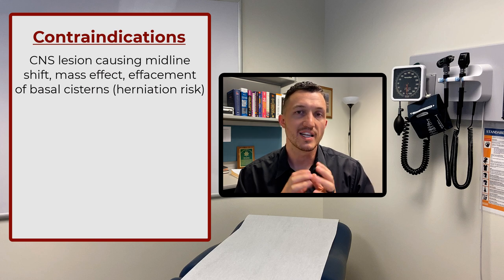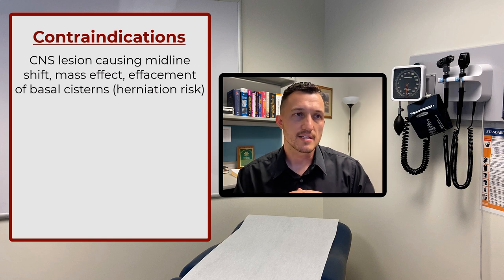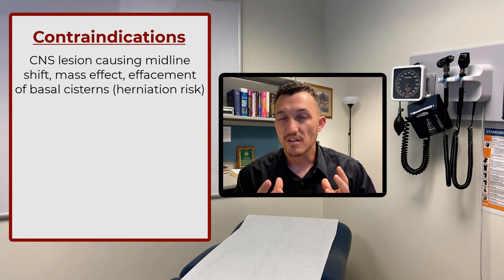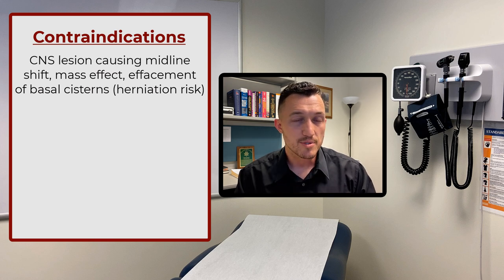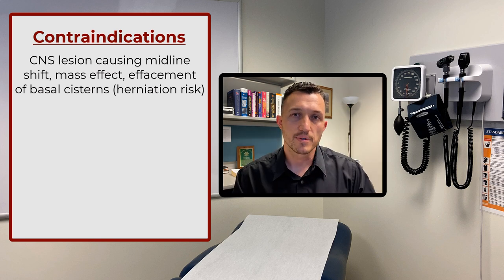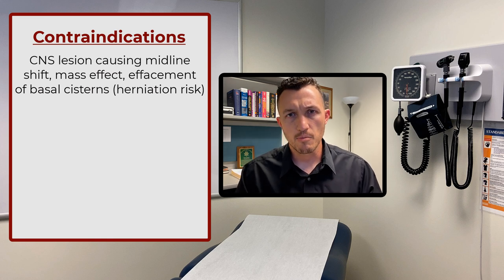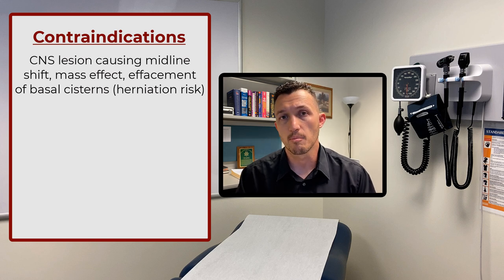We need to know there's no mass effect, midline shift, or abnormal loss of cerebrospinal cisterns on a head CT. Posterior fossa masses, spinal column masses, large brain abscesses, and large brain tumors are all things that can cause unequal pressures and put a patient at increased risk of brain herniation during a lumbar puncture. That's why a head CT is most often performed before a lumbar puncture in many situations, especially if there is a focal neurologic deficit.